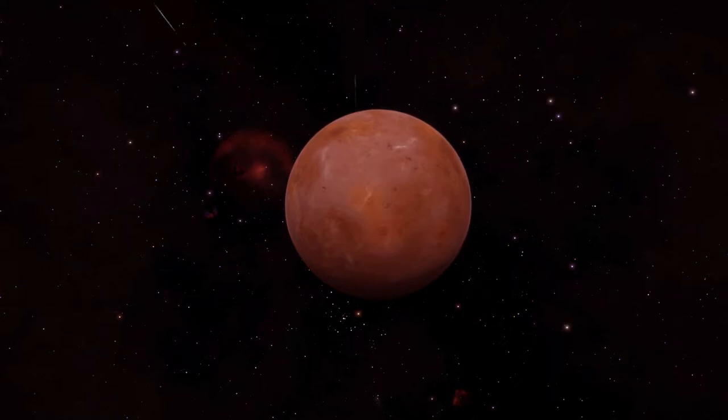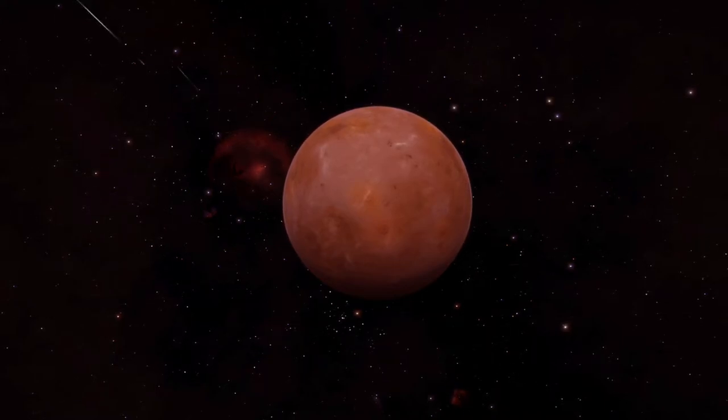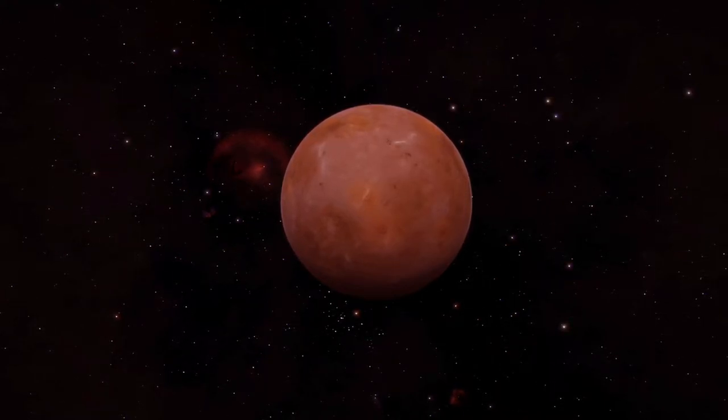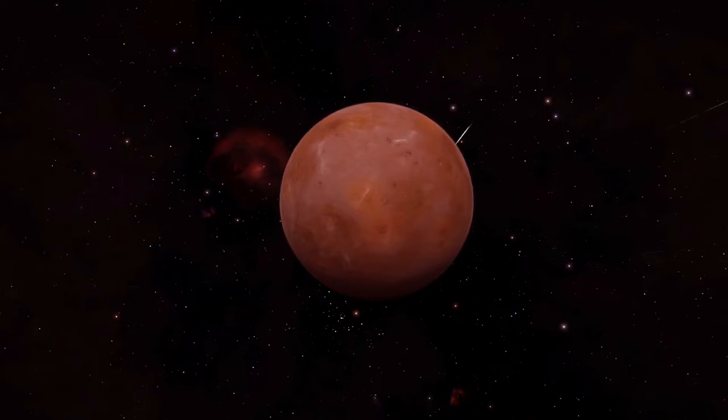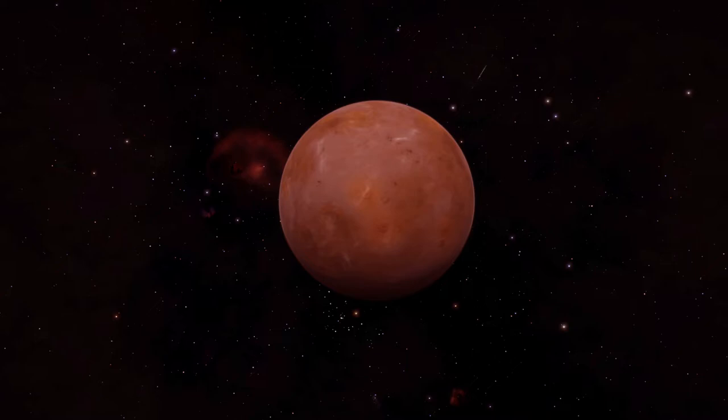Planetary habitability of red dwarf systems is subject to some debate. Despite their great numbers and long lifespans, there are several factors which may make life difficult on planets around a red dwarf. First, planets in the habitable zone of a red dwarf would be so close to the parent star that they would likely be tidally locked.